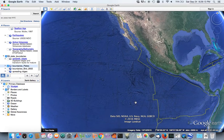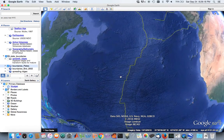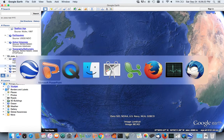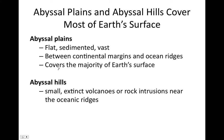We're now looking at the Pacific, and there are ridges in the Pacific as well. In between the continental margins and the mid-ocean ridges, we have what's known as the abyssal plains — very flat, vast, sedimented areas of the seafloor and ocean basin. They cover the majority of Earth's surface because they cover the majority of the ocean. They are the largest feature of ocean basins. On those abyssal plains, we have small extinct volcanoes or rock intrusions that formed near oceanic ridges, called abyssal hills, which add small-scale bathymetry on the abyssal plains.